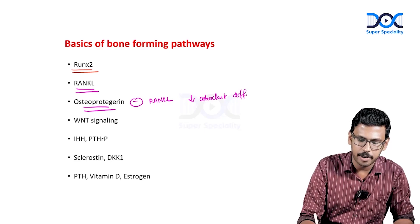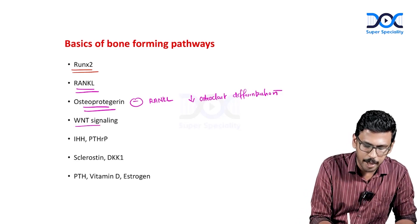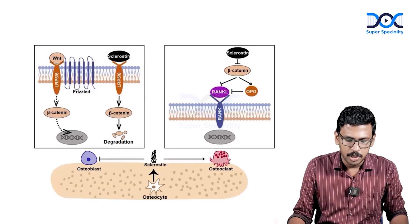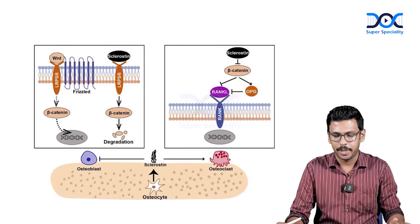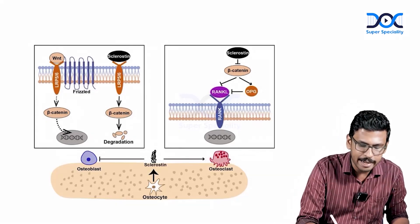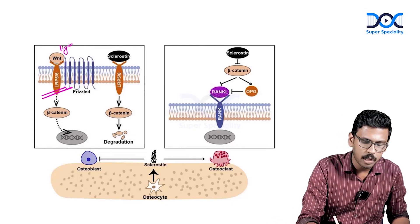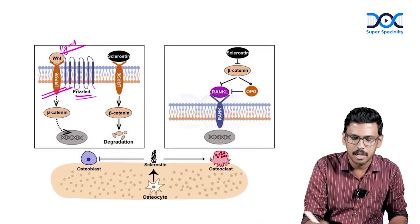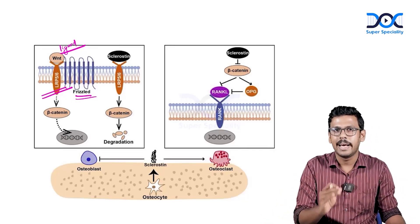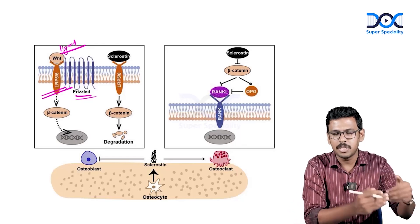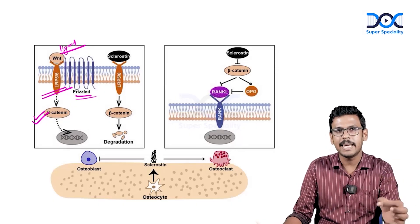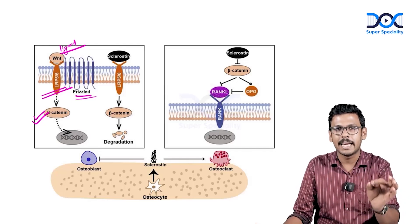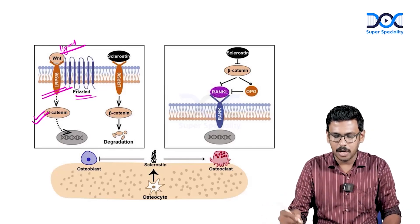WNT signaling is the major anabolic bone-forming pathway. The receptor for WNT is LRP5/6. The core receptor binding to LRP5/6 is called Frizzled. Binding of WNT to this receptor results in the activation of beta-catenin. When beta-catenin levels increase in the intracellular compartment, it translocates to the nucleus and binds to corresponding beta-catenin binding areas.